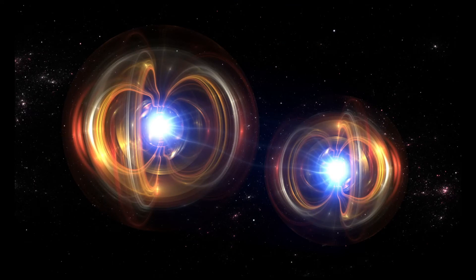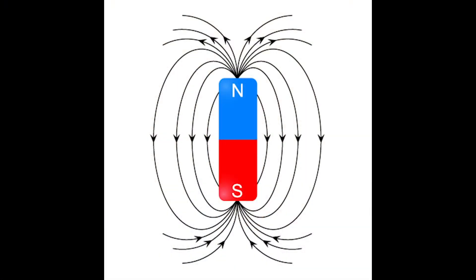This is also how the cells in our body utilize energy. Our cells have a potential difference as well. This is referred to as a dipole, and it is what allows them to circulate energy. A dipole is a pair of equal and oppositely charged or magnetized poles separated by a distance.